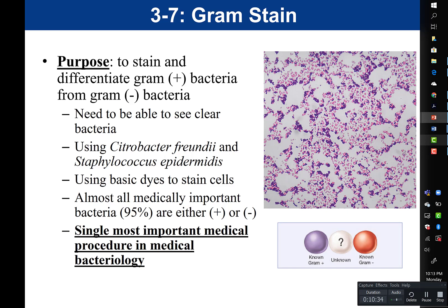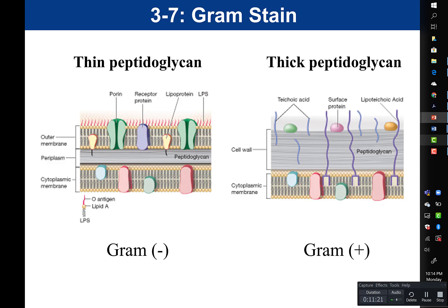In the gram stain, we use two basic dyes: crystal violet and safranin. At the end of the procedure, gram-positive bacteria appear purple and gram-negative appear pinkish-red. In the lab, you mixed Citrobacter freundii (gram-negative) with Staphylococcus epidermidis (gram-positive) in the same puddle of water, so you would see both gram-positive and gram-negative organisms together.